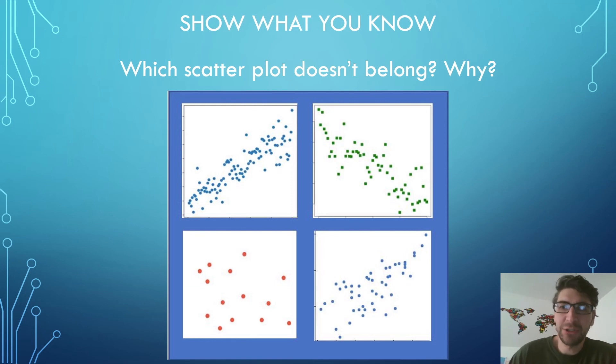So now it's time to try out some of that new vocabulary. This is a 'which one doesn't belong.' If you've done this routine in class, you know that any of these answers would be correct as long as you can justify your answer why. So take a look at these scatter plots. Pick one that you think doesn't belong with the others and then explain why.